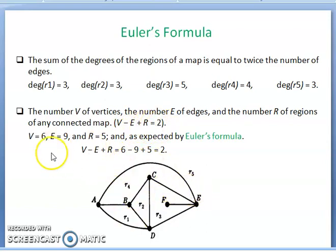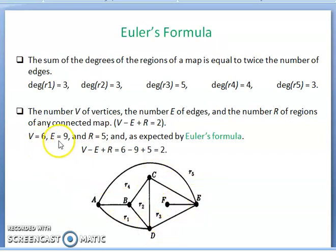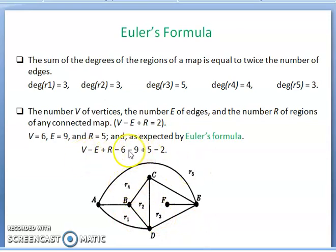For this map, the number of vertices is 6 (A, B, C, D, E, F), the number of edges is 9, and the number of regions is 5 (R1, R2, R3, R4, R5). So 6 minus 9 plus 5 equals 2. This verifies Euler's formula.